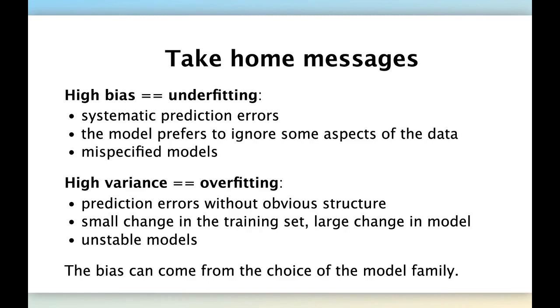So the main take-home message from this presentation is that a high bias model is underfitting. It makes systematic prediction errors. The model prefers to ignore some aspects of the data. And sometimes we call them misspecified models. They cannot really adjust to the true models because we made a choice that is moving them away on average from the true model. On the opposite side, we have the high variance model, which are overfitting. Their prediction errors do not have a systematic object structure. They can be all around the place. And a small change in the training set causes a large change in the trained model, in the prediction function that we obtain at the end of the training process. So you can consider them as unstable models because they have too much flexibility and they capture the noise of the data. Keep in mind that the bias can come from the choice of the model family and not just the choice of a specific parameter of a model class.